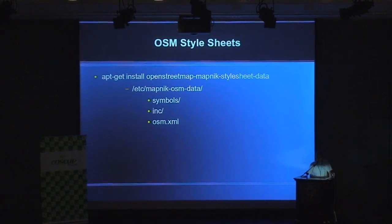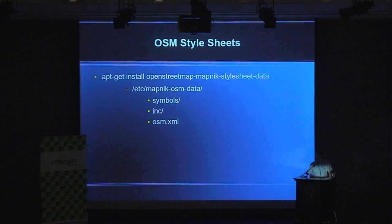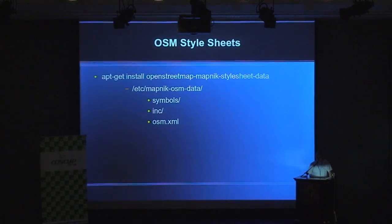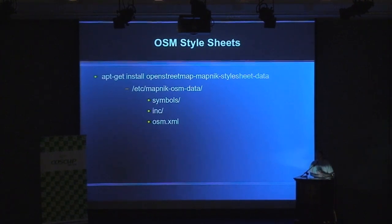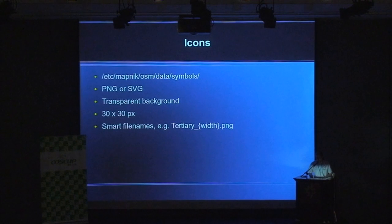For the OSM style sheets on my Ubuntu machine, I use a simple install command — it's available in the OpenStreetMap PPA. There is then a directory at /etc/mapnik-osm-data, which has subdirectories we will use. One is for symbols — this is where the icons go. Another is the include directory, which I'll explain later. And then we have the general OSM XML style sheet, which sources all these things together and is basically the master style sheet.